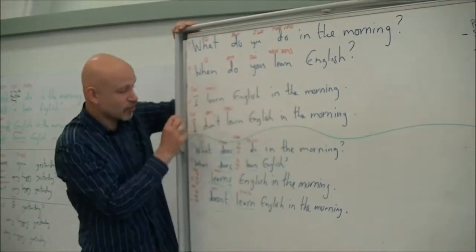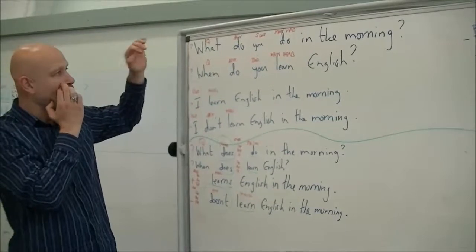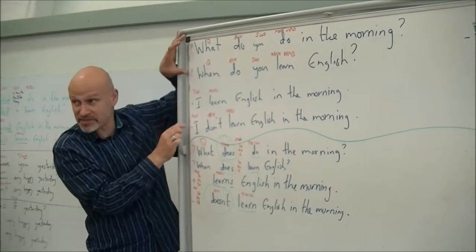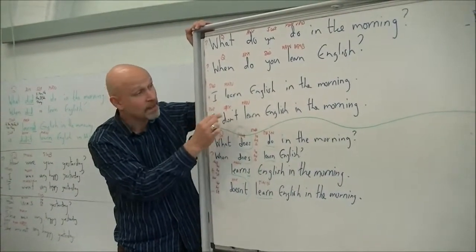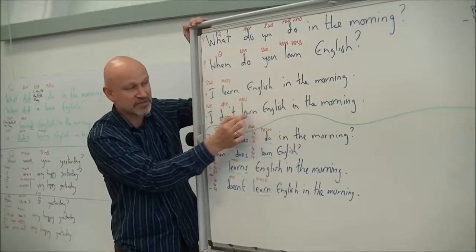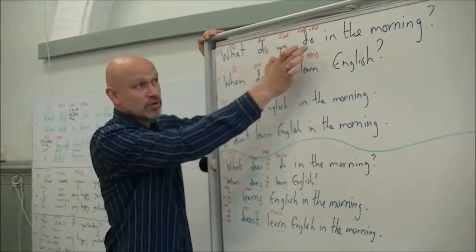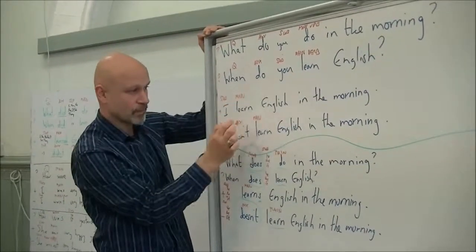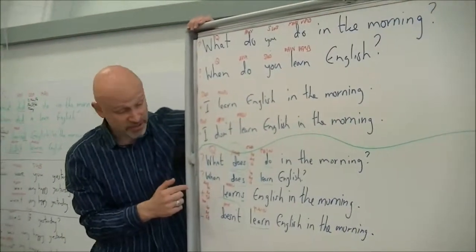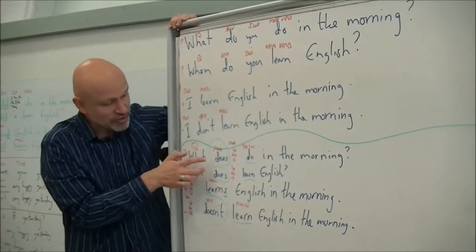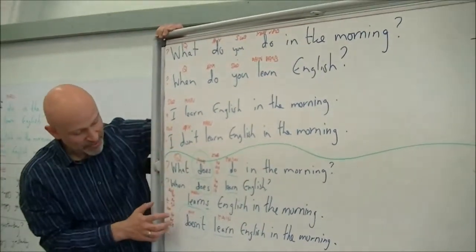The important thing — 'I don't learn English in the morning' is the negative sentence. When we look at questions and negatives in the present simple, we have to remember to use the auxiliary verb 'do.' We also have to remember that the main verb is always present simple first person. That's the same with questions: auxiliary verb 'do,' main verb present simple. Same in negatives. Questions and negatives.